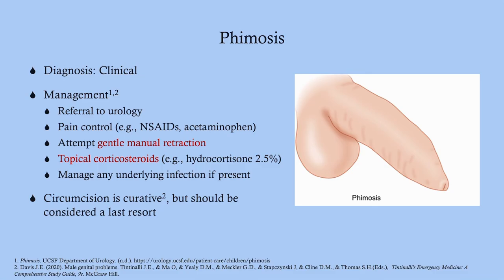The diagnosis is clinical. Management often requires referral to urology, especially for older children and adults. For pain control, use NSAIDs, or acetaminophen is probably better in children. You can attempt a very gentle manual retraction — it's not always going to work but can be attempted. If manual retraction is not possible, refer to urology, as surgical intervention — circumcision — may be needed. Topical corticosteroids can also be useful as a second-line before surgery.